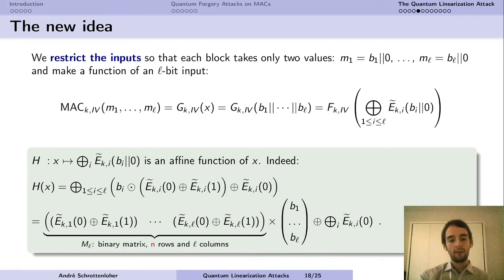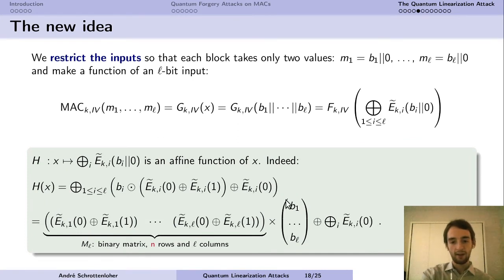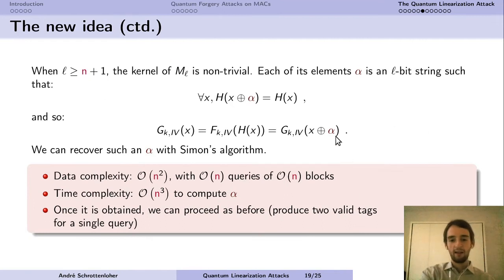But affine function means that if there are too many blocks, because we have the choice of the number of blocks that we query, so if there are more than n or more than n plus 1 blocks, then we can expect that this matrix ML is going to have a non-trivial kernel. And there are going to be L-bit strings such that for each X, X plus alpha has the same output by this function H as X. Right, so this alpha here is simply going to be a choice of input bits such that if you flip all these input bits, then you re-obtain the same value just before post-processing, so in this sum.